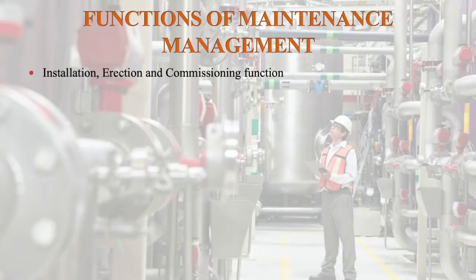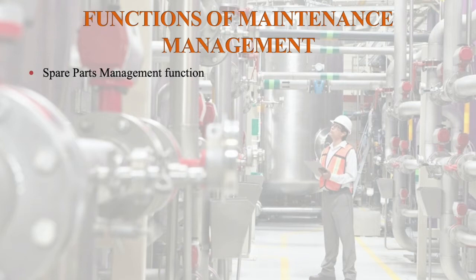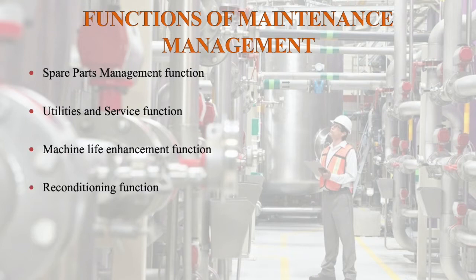Functions of maintenance management. To fulfill the needs of the production department and keep machines in good condition, the maintenance department has various functions: installation, erection and commissioning function; preventive function; corrective function; updating function; recording function; training function; spare parts management function; utilities and service function; machine life enhancement function; reconditioning function; and maintenance planning function. These are the various functions of a maintenance management department.